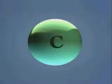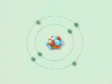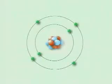Believe it or not, atoms are made up of even smaller particles called subatomic particles. There are three different types of subatomic particles: protons, neutrons, and electrons.